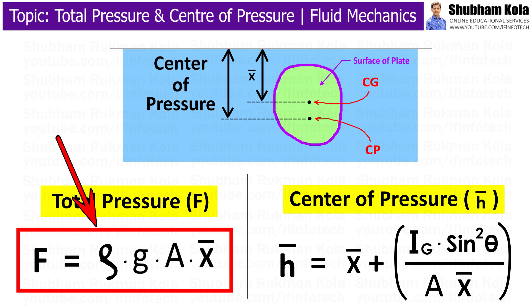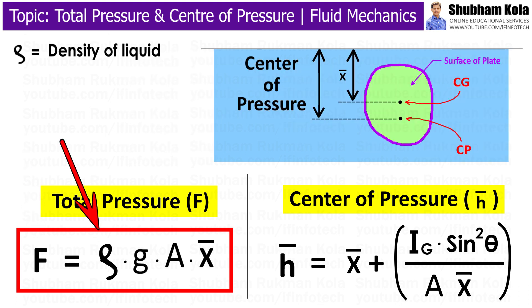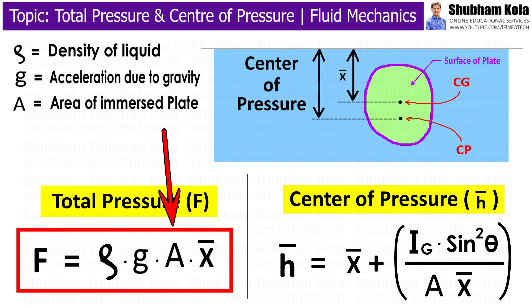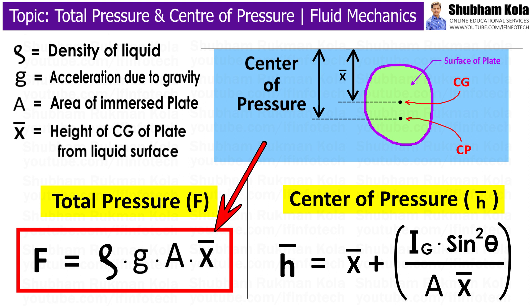F equals ρgA times X-bar, measured in Newton. Here, ρ is the density of liquid and g is acceleration due to gravity. Capital A is the area of the immersed surface and X-bar is the height of the center of gravity of the immersed surface from the liquid surface.